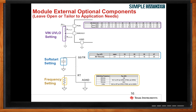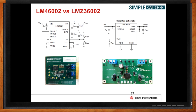Let's back up and compare these two solutions. What we're looking at here are two EVMs — evaluation modules — for both the LM46002 and the LMZ36002. The device on the left shows the inductor, the regulator, and all of the different external components packaged within a box. On the right-hand side, you have the LMZ36002, where the inductor is actually embedded on top of the IC, with only the input/output capacitor and resistors to set the output. With this comparison, you may ask: what are the pros and cons of both?